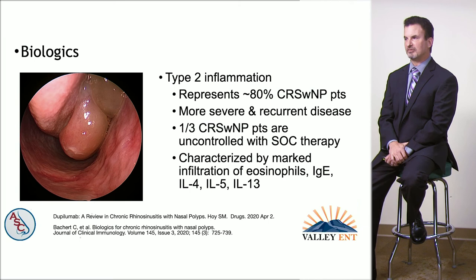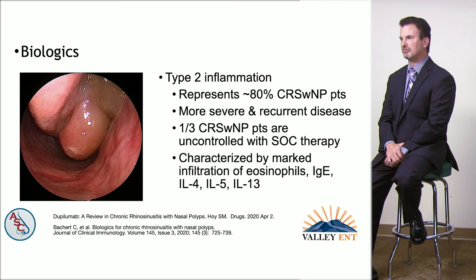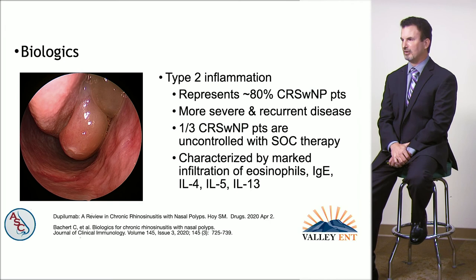Type 2 inflammation represents 80% of patients with polyps. These patients have more severe and recurrent disease. One-third of polyp patients are not controlled with standard of care therapy. The key players in creating type 2 inflammation are eosinophils, IgE, and interleukins 4, 5, and 13.